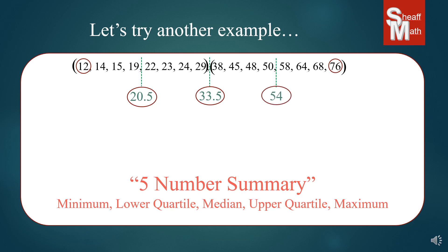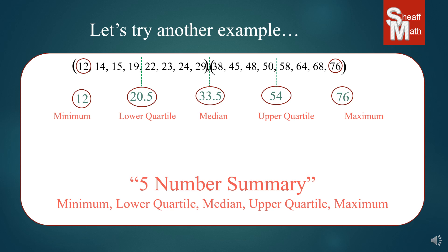So now we have all of our numbers. I'll bring 12 and 76 down to organize it and put the names of each one. 12 is the minimum, 20.5 is the lower quartile, 33.5 is the median, 54 is the upper quartile, and 76 is the maximum.